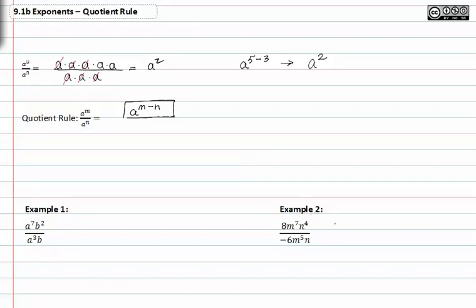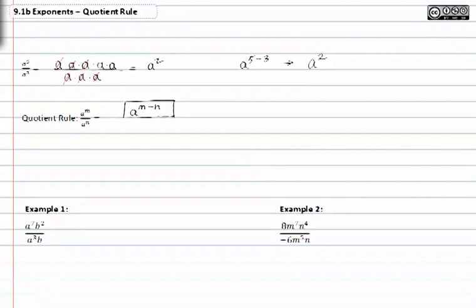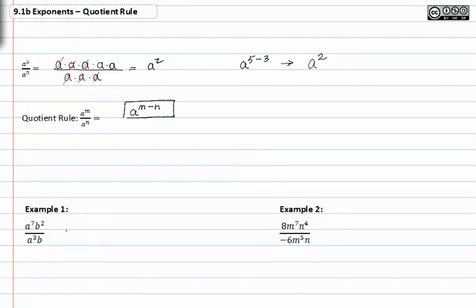So let's work some examples, and hopefully this will become a little more clear. In example one, we have a to the seventh times b to the second divided by a to the third times b. In this case, only the bases or the a's will match and divide with common factors.